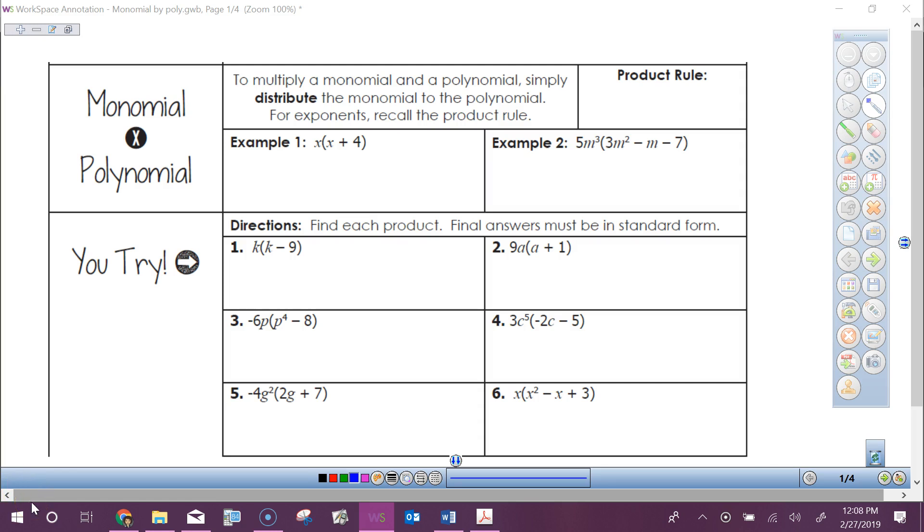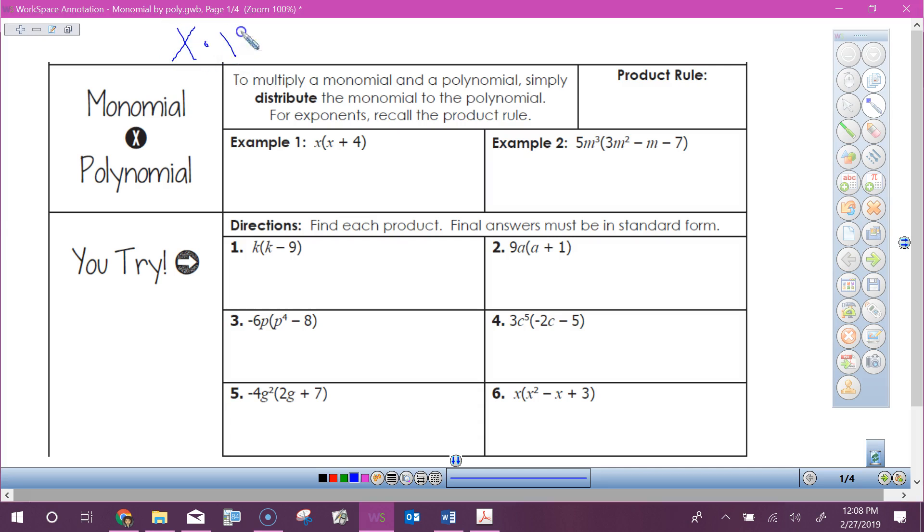Alright, before we multiply these, we have to talk about one thing that is a very common mistake. What is x times x? x squared. When we're multiplying, remember we're adding our exponents. What is it when we take x plus x? That's 2x, because we're adding together our two x's. You might want to make a little note on there, because that is probably the most common mistake that is made: x times x is x squared, but x plus x is going to be 2x.